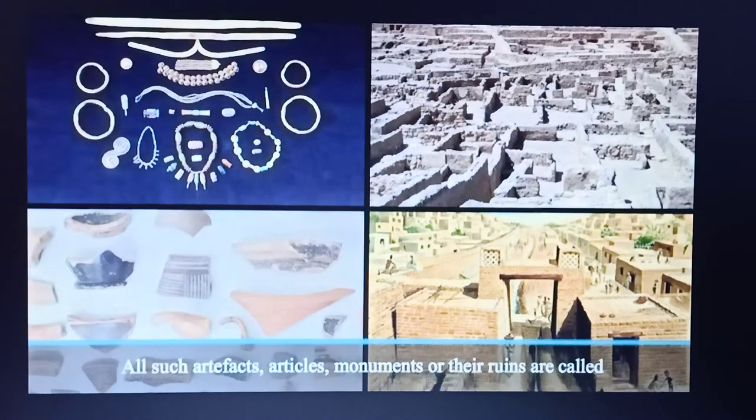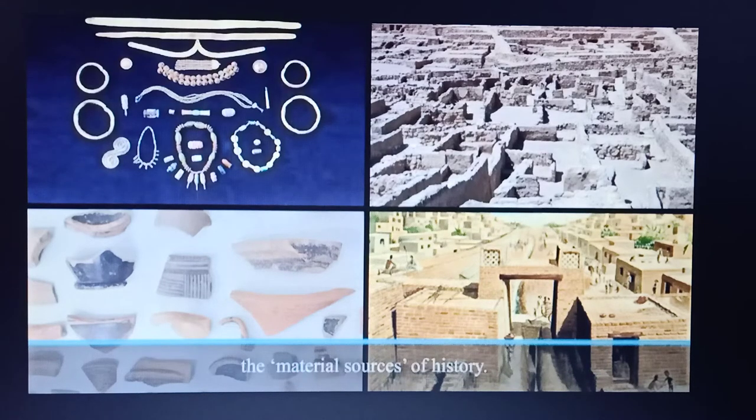We also find ancient coins and seals. All these give us information about human activities in the past. All such artifacts, articles, monuments or their ruins are called the material sources of history.